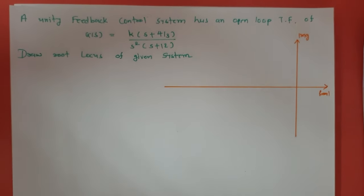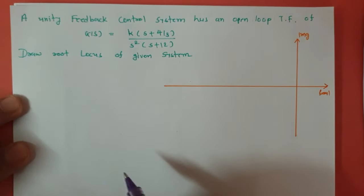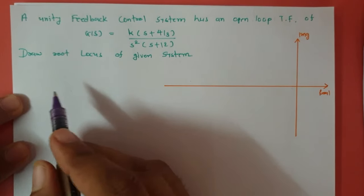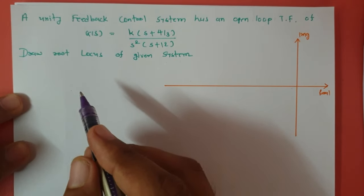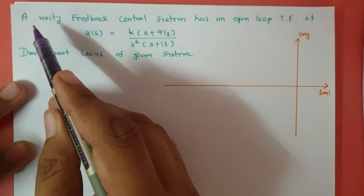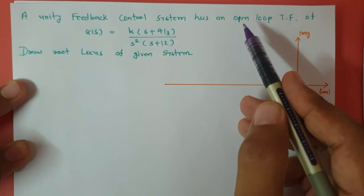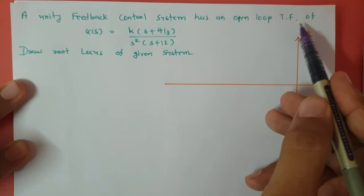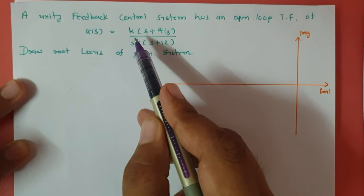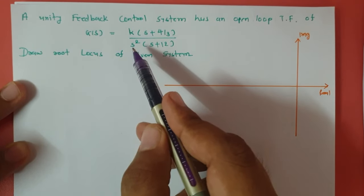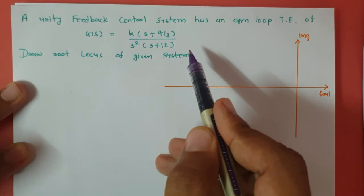Welcome to the control engineering playlist. Professor Ritesh Dolakya is going to explain a root locus example in this video. The question is: a unity feedback control system has an open loop transfer function G(s) = k(s + 4/3) divided by s² (s + 12).